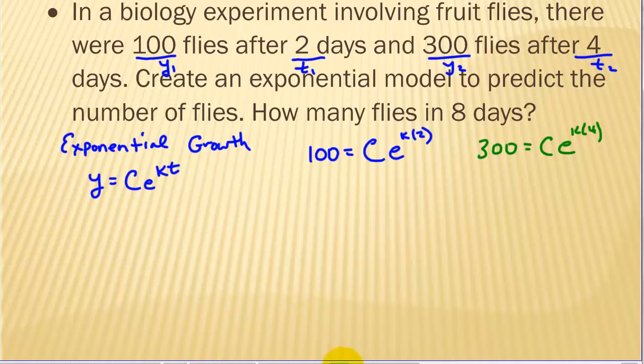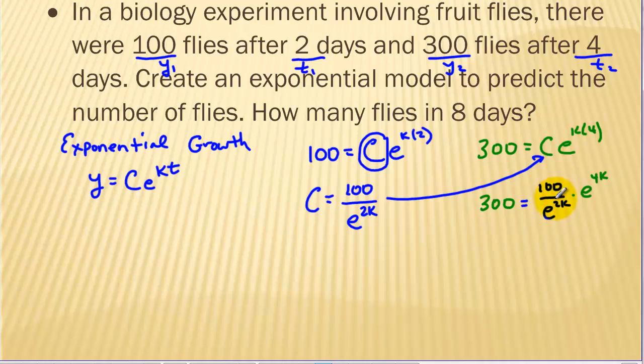One technique when solving systems of equations is the substitution method. I'm going to solve this equation for the letter C. So I get C equals 100 over e to the 2k and I can substitute that into the other equation. So we've got 300 equals 100 over e to the 2k times e to the 4k. Using exponent properties when we divide, we subtract the exponents. So we've got 300 equals 100 times e to the 2k.